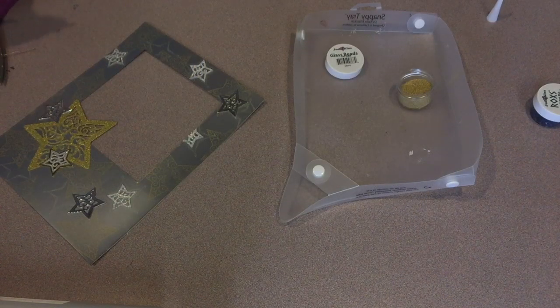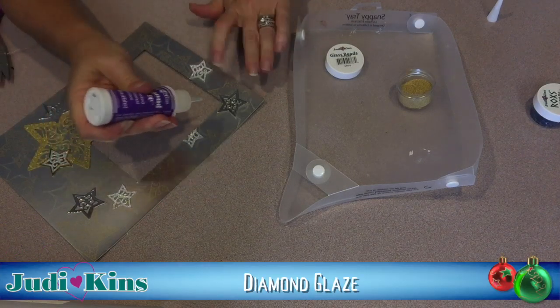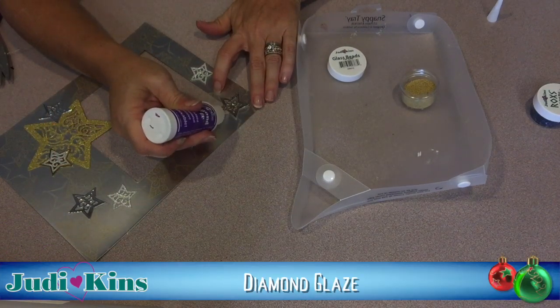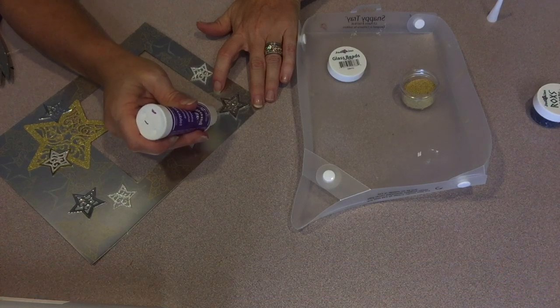To add some more sparkling dimensional embellishments, I'm using Judykin's Diamond Glaze and I love this delicate little tip that you can use to give you more control. And the glaze is also an adhesive.